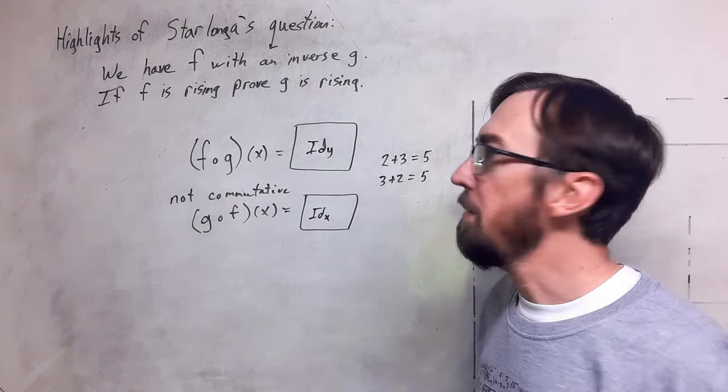We further are going to say that if the function F has an inverse function named G, where G is defined from B to A for every element that is in B, then G is strictly monotonically increasing also. All right, so let's move forward with a proof.